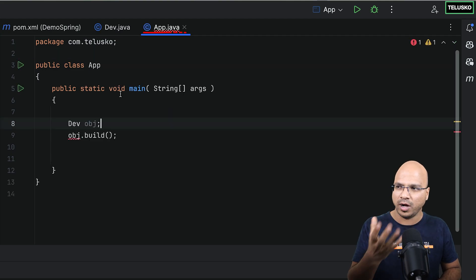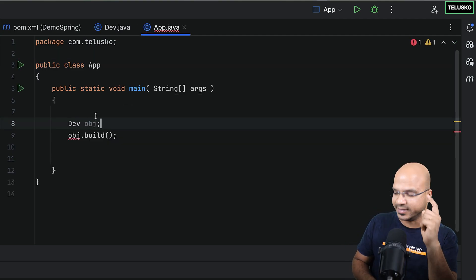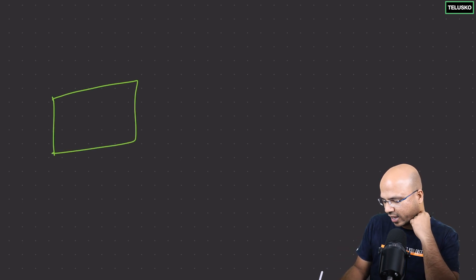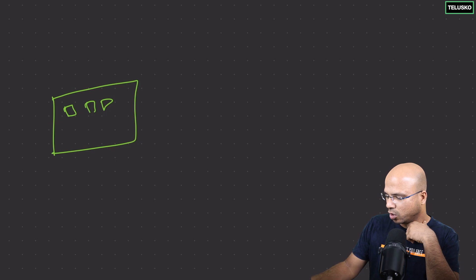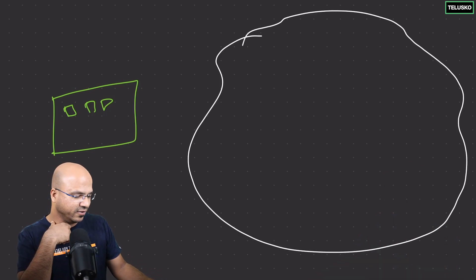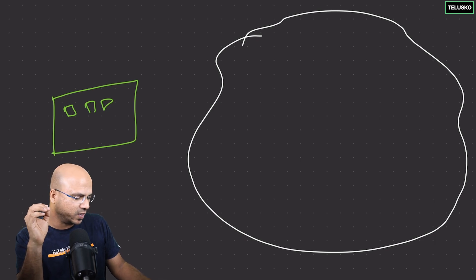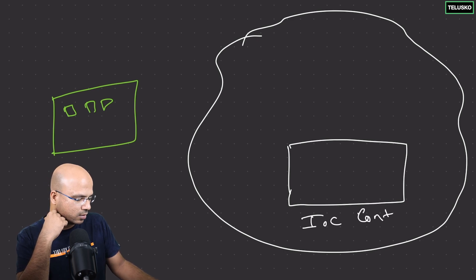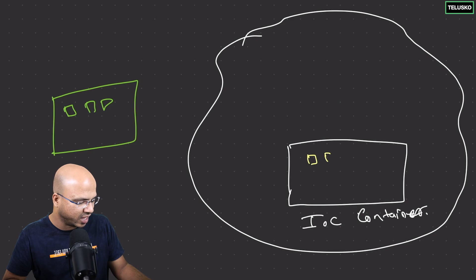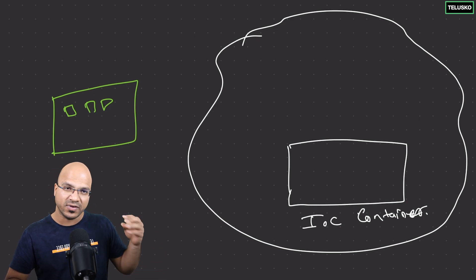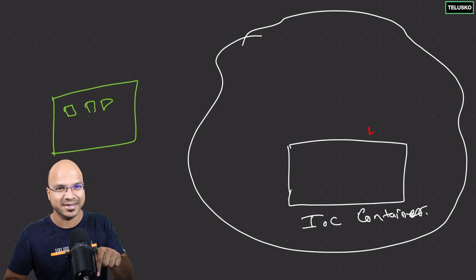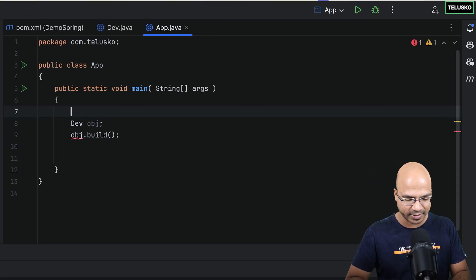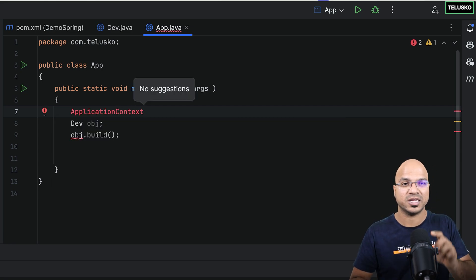The first thing is, if you want the Dev object, we have to work with the container. Remember, you have a JVM with heap memory, and inside that you have your IOC container, and inside that you will have your objects. But unfortunately we don't have the object yet. So how do we get this object? Even before you get the object, the first thing you need is the container. To work with the container, we have to create an object of ApplicationContext.